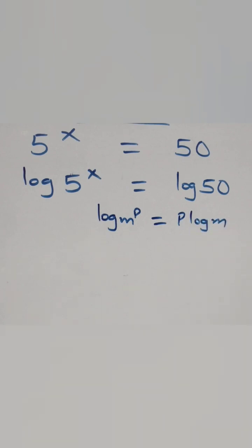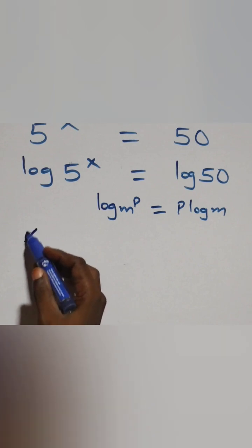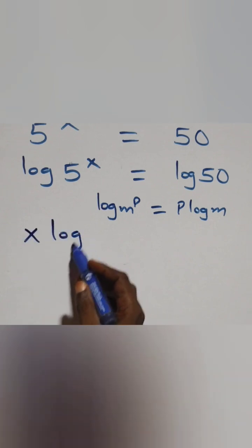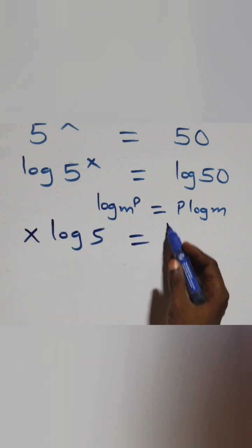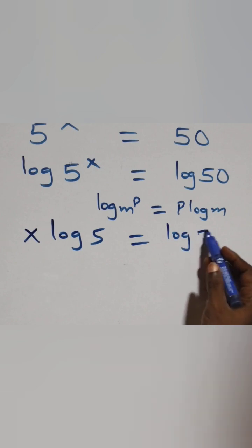At this, we have x log 5 equals to log 50 from here.